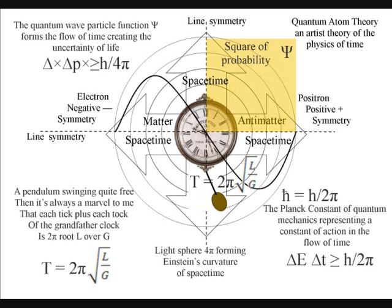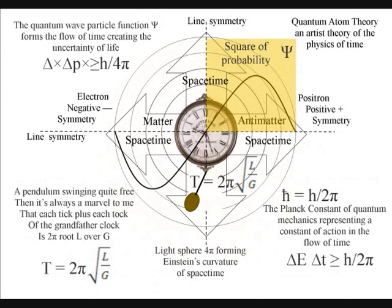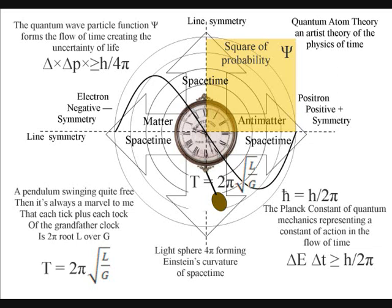This line symmetry is formed because when light comes in contact with matter, it forms a photon-electron coupling, and we have matter-antimatter annihilation in just one direction, forming the arrow of time in that reference frame. In the lower right-hand corner of the diagram, we have the Planck constant, h over 2 pi, representing a constant of action in the dynamic process that forms the arrow of time. Also, we see Heisenberg's uncertainty principle reformulated with energy and time, with 2 pi representing the timeline instead of 4 pi representing three-dimensional space.